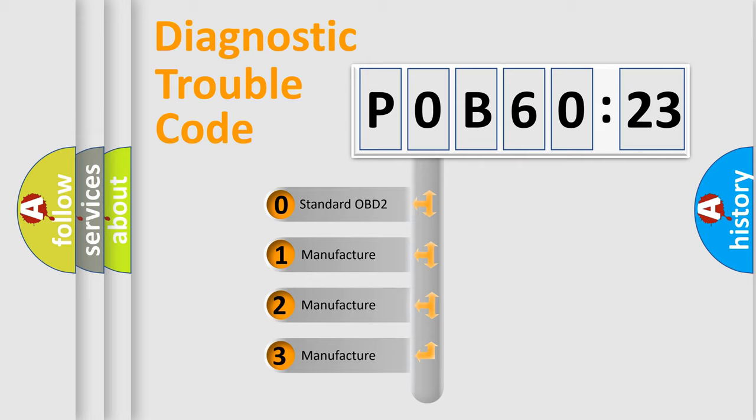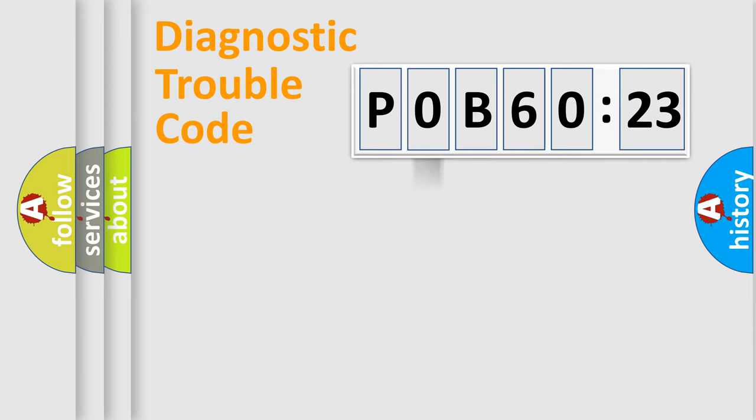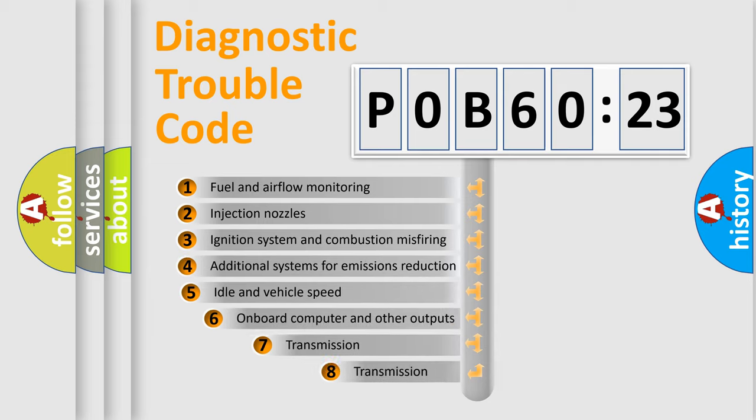If the second character is expressed as zero, it is a standardized error. In the case of numbers 1, 2, 3, it is a manufacturer-specific expression of the car error.